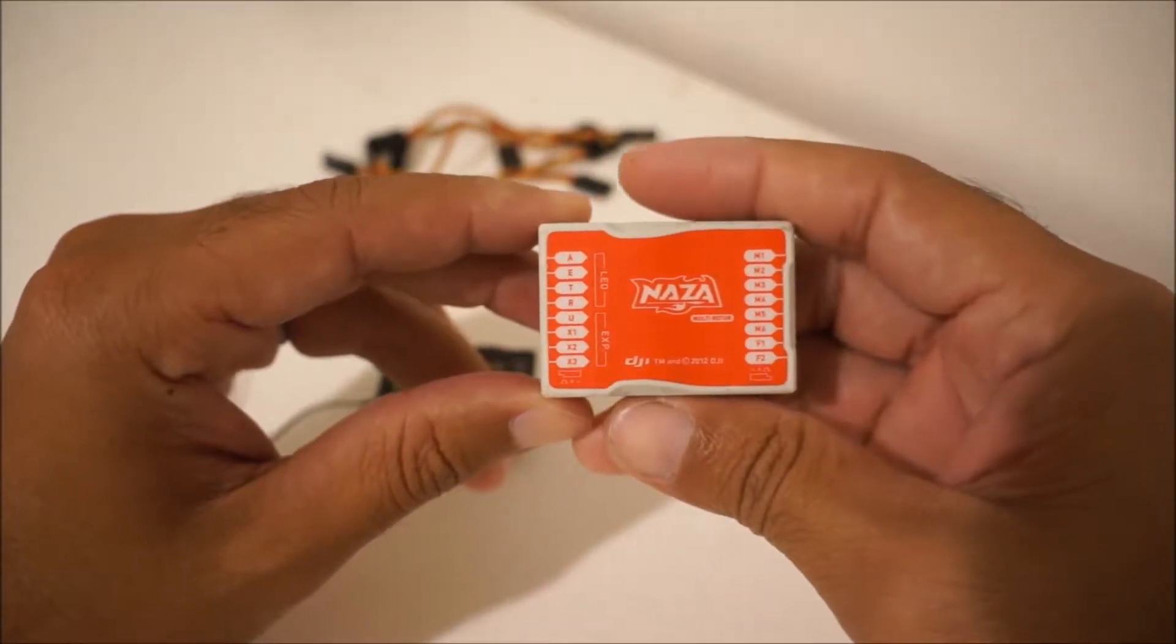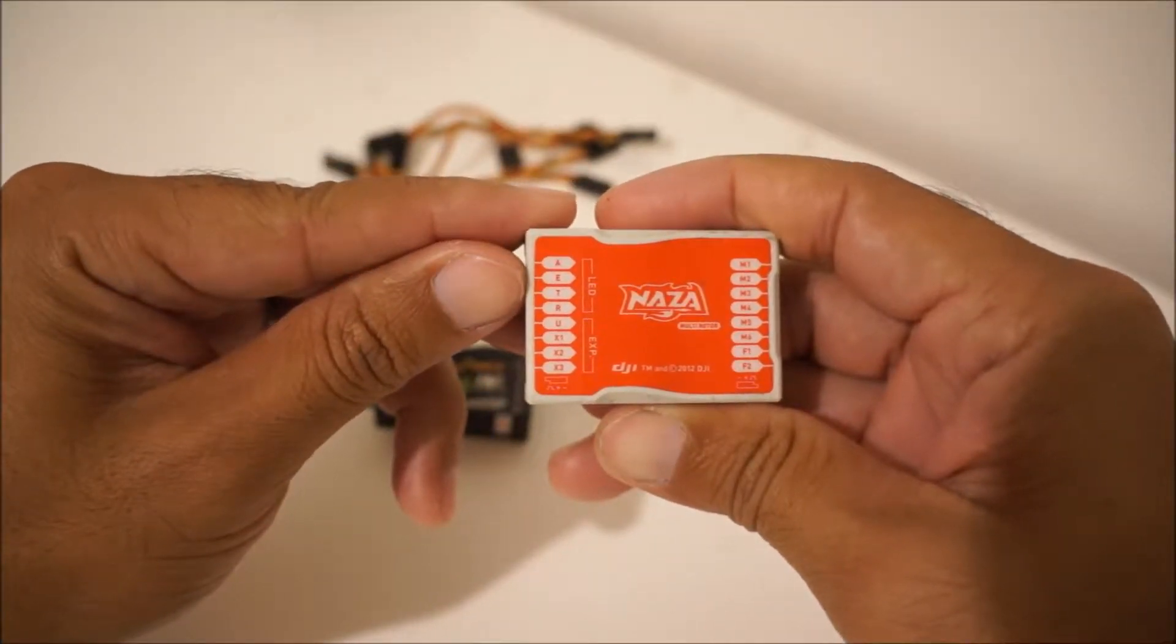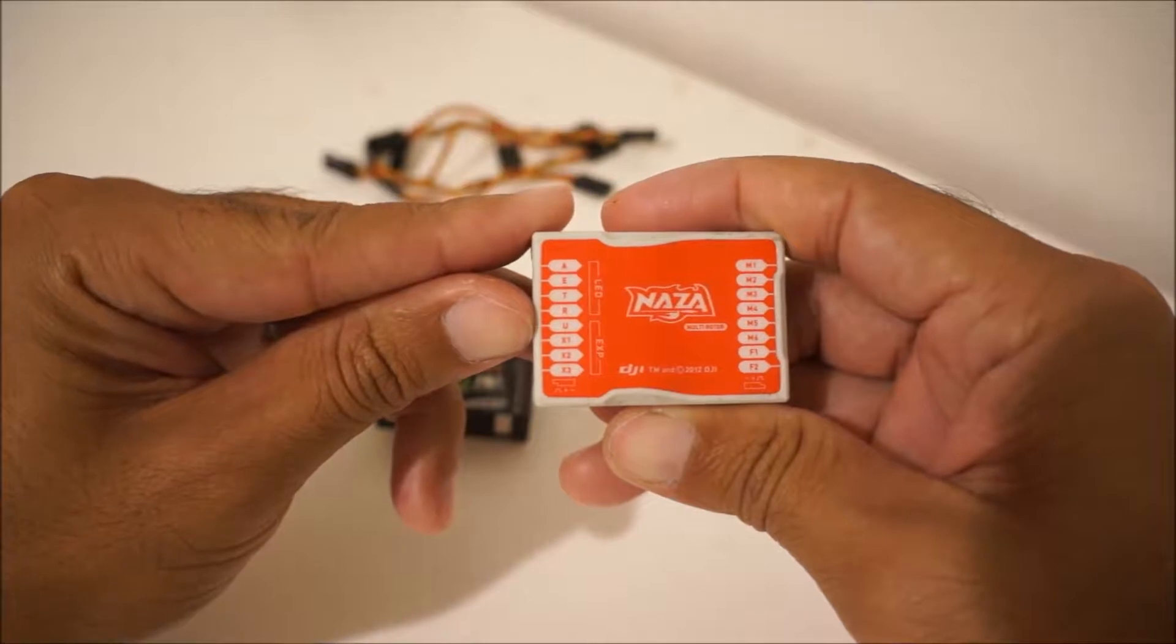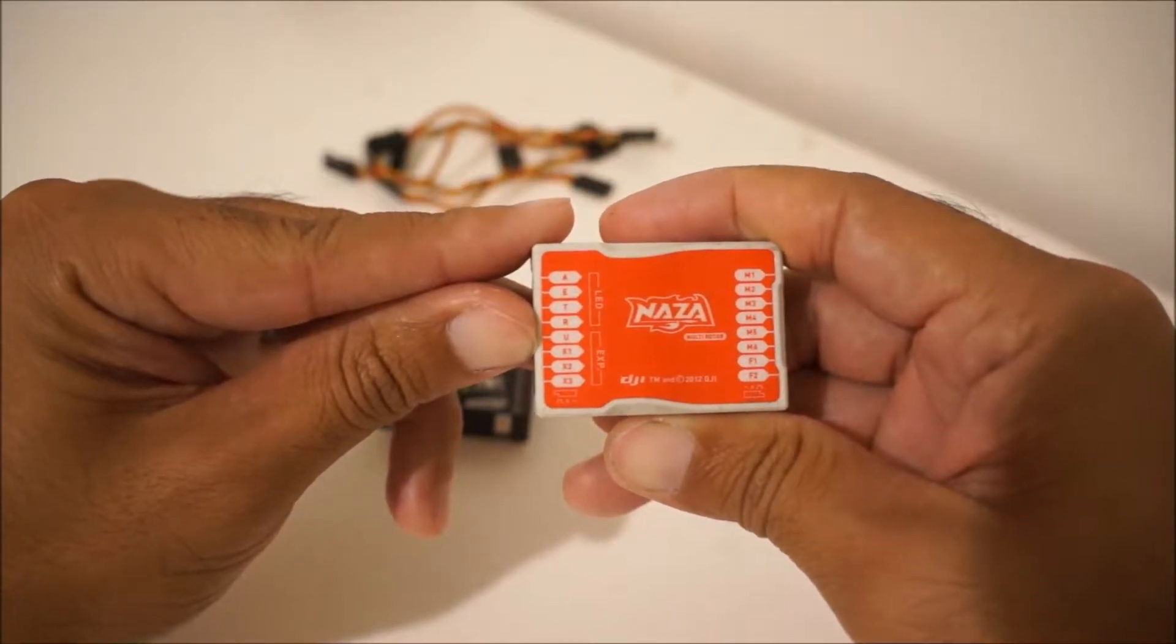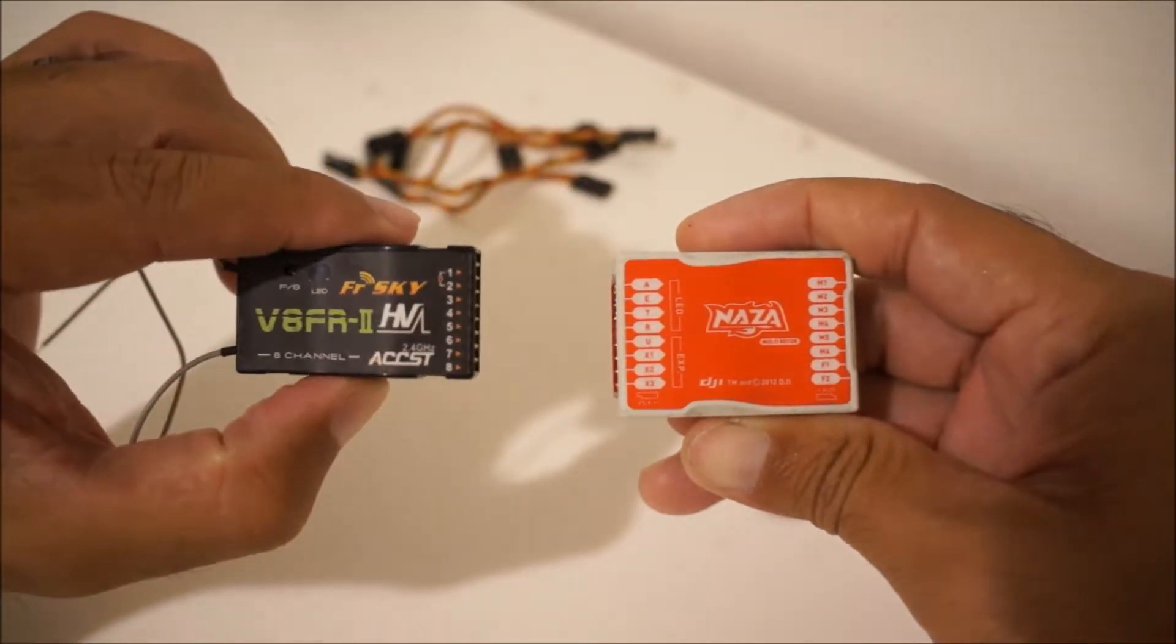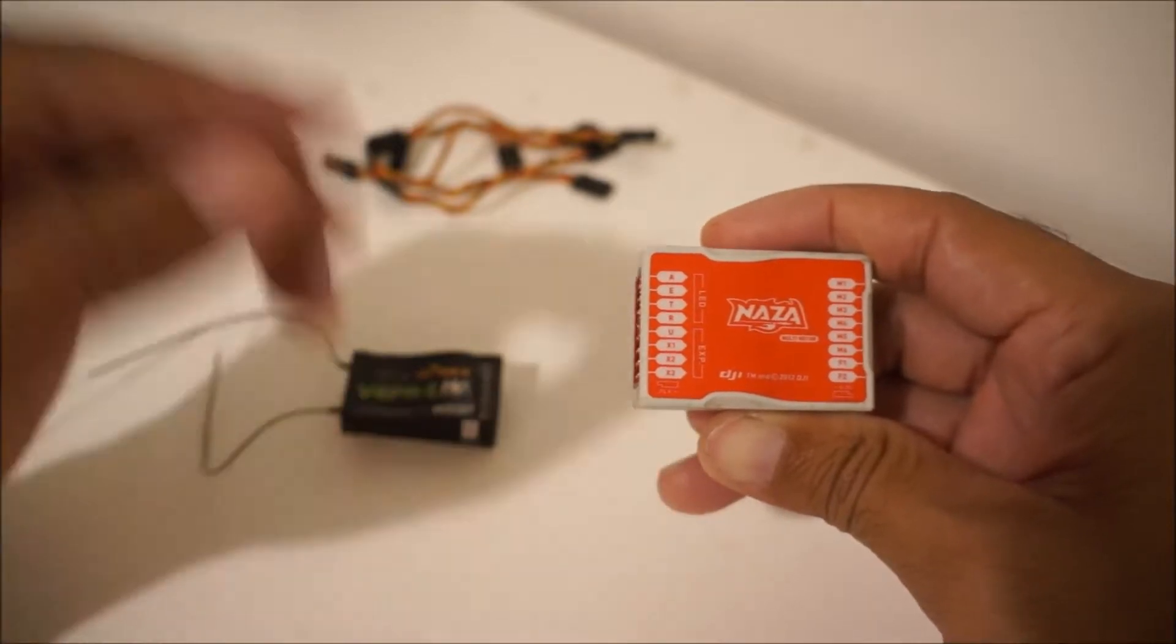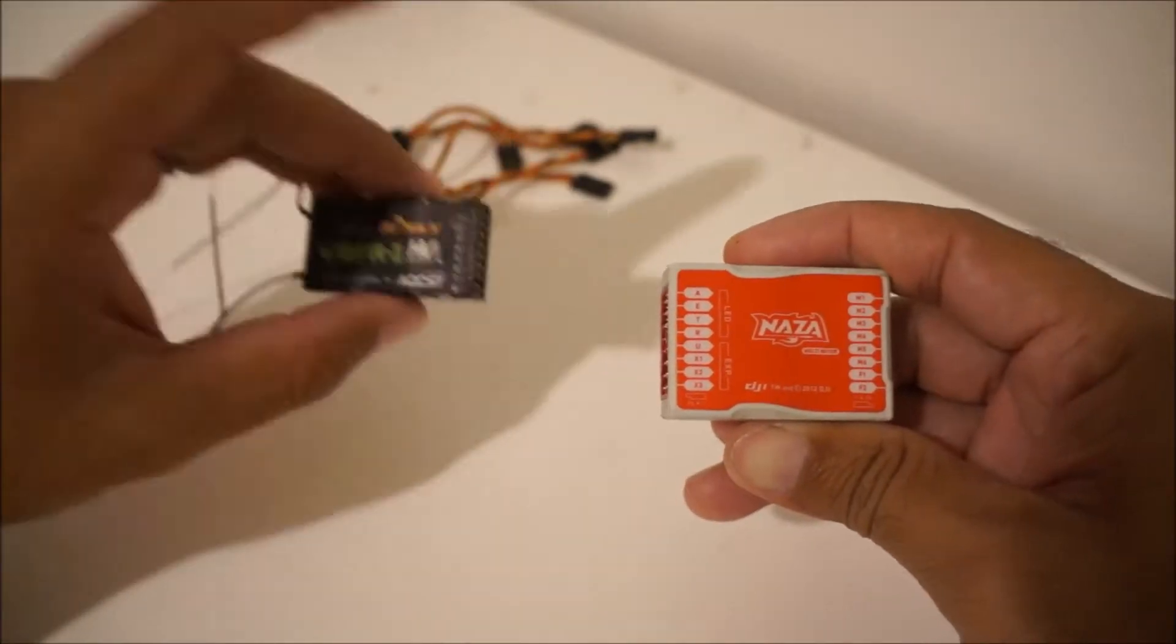On the flight controller here we have the Naza, and you can see it has an A, an E, a T, an R, and a U. Those are the minimum channels that you are going to be working with as far as connections to your radio. There's some additional stuff on here again that's not needed to fly the quadcopter, but if you add extra stuff to it you're going to need those.